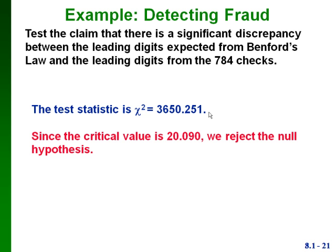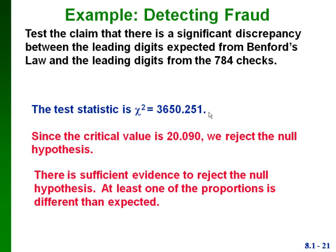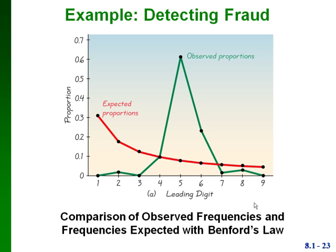Either way we get a conclusion of rejecting the null hypothesis, which means there's sufficient evidence that at least one of the proportions is different than expected — telling us there's a good chance there was fraud in this case. Here's a graph that compares our expected proportions with the observed proportions of those leading digits. For the 5 as a leading digit, notice how far the observed proportion is from the expected proportion.